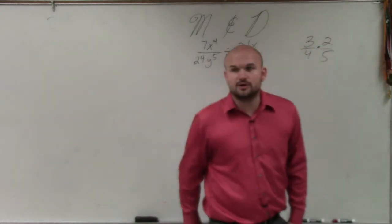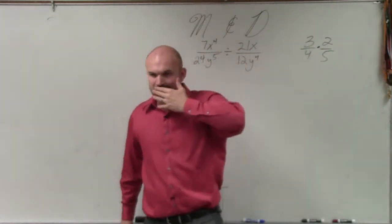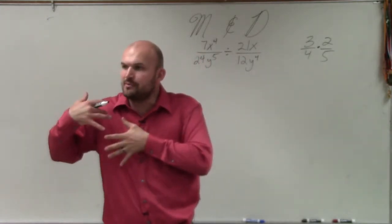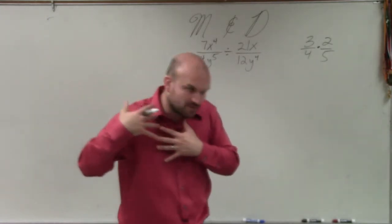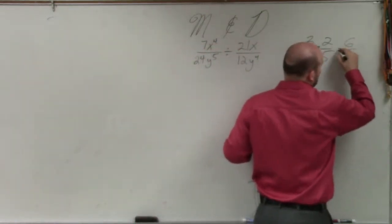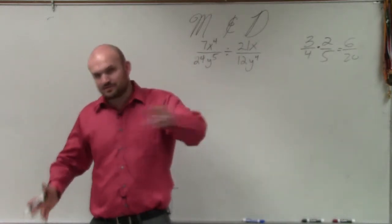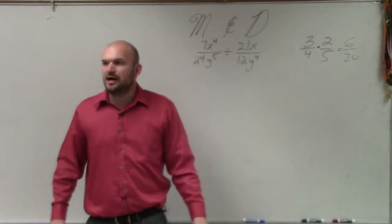So I'm just going to do a quick little review. If you have 3 fourths times 2 fifths, and we need to multiply those fractions, if you guys remember, basically when we were multiplying fractions, we just multiplied directly across. So therefore, we had 6 over 20. Right? This is something we learned at the very, very beginning. We did like tons of rotations, had you guys moving all along and doing that.